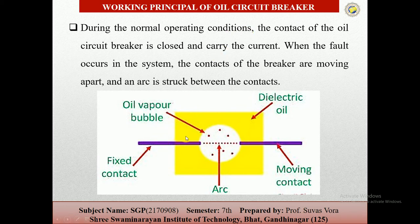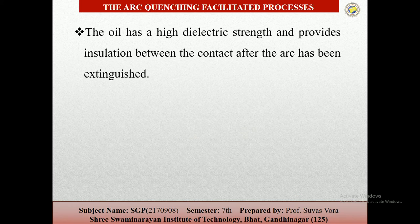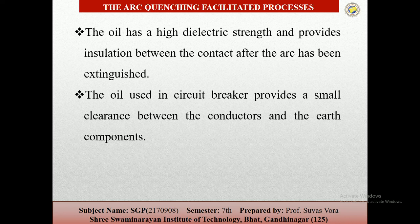Here you can see that one is the fixed contact, another one is the moving contact, and these are the electrical oils and the oil vapor bubbles. The oil has high dielectric strength and provides insulation between the contacts after the arc has been extinguished. The oil used in the circuit breakers provides small clearance between the conductor and the earth components.